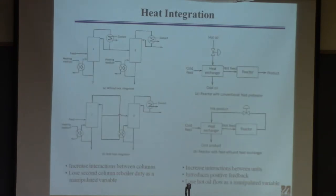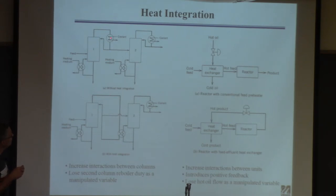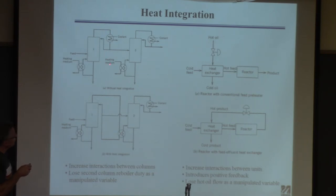Let's say you have two coupled columns, and this column runs at a hotter temperature than this column. You're losing a lot of energy, so you do some heat integration. Instead of having a separate condenser and reboiler, you integrate them together — take the overhead product, run it through the reboiler — so it cools that stream and heats the other. You won't need an external source of heat or cooling. From a steady-state perspective, this looks great because you save energy.